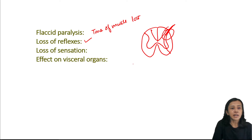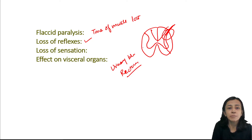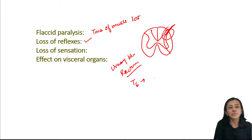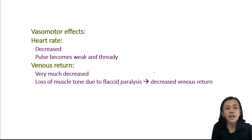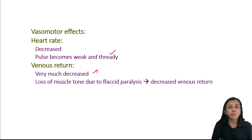Visceral organs — bowel and bladder — are paralyzed. The rectum may not be fully paralyzed, but the bowel becomes hypotonic and may produce constipation. The penis becomes flaccid and erection is not possible. When the lesion is at the T6 level, all impulses from the abdominal viscera are cut off from the brain, and gripping sensation or distension of viscera are not appreciated. Heart rate decreases and the pulse becomes weak and thready. Venous return decreases greatly due to flaccid paralysis and loss of muscle tone.